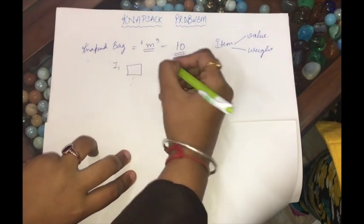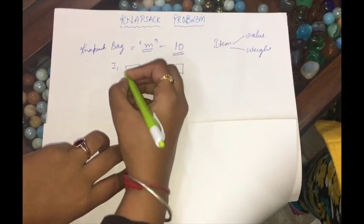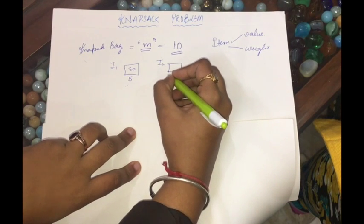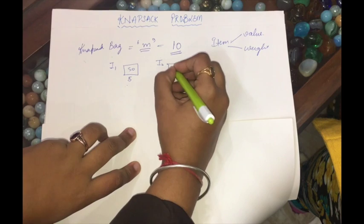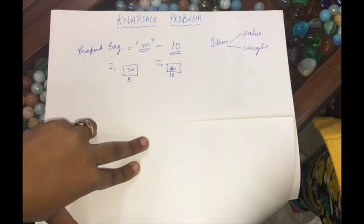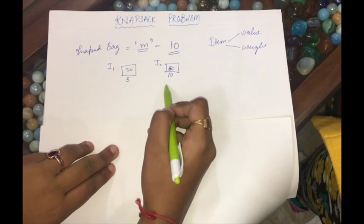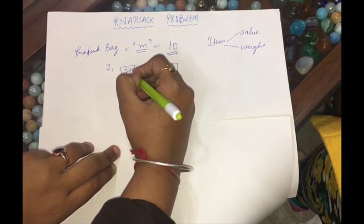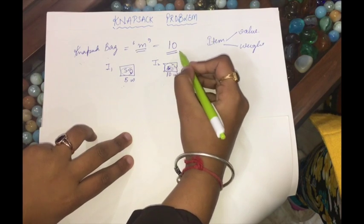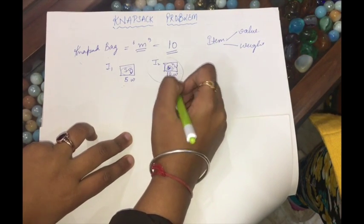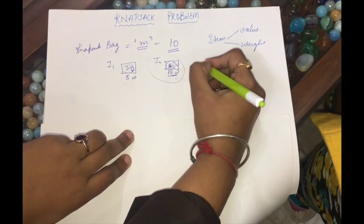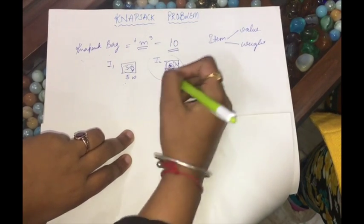Suppose I have item 1 and item 2. Item 1 has a profit of 50 and weight of 5. Item 2 has a value of 50 and weight of 10. I have a bag of capacity 10. If I put item 2 in my bag first, my bag gets filled up — capacity is 10 and the weight is 10 — and I get only a value of 50.